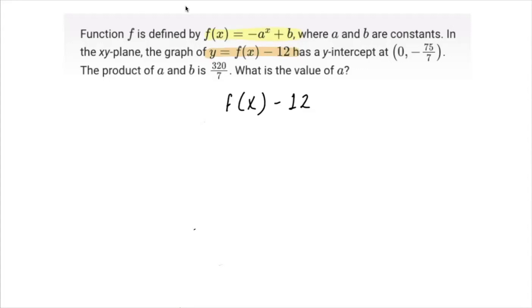In the second equation, replace f(x) with the expression that you're given for f(x) in the first sentence of the question. So you're going to substitute in negative a raised to the x power plus b, and then you're going to include the minus 12 because this function is getting shifted down 12 units.